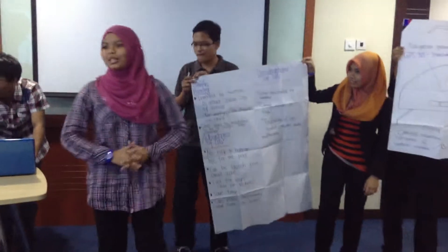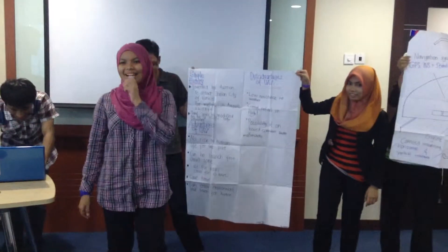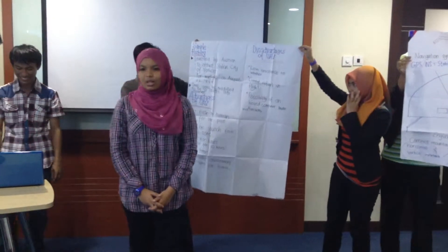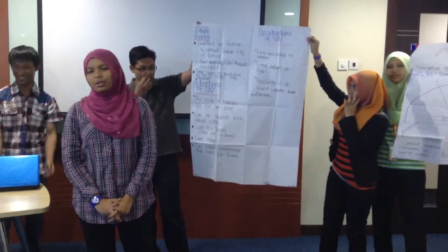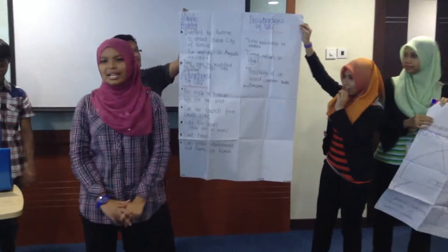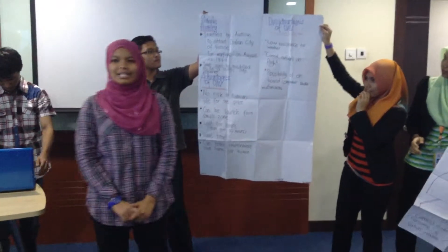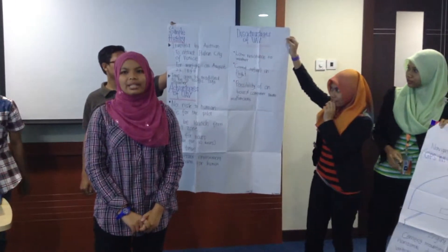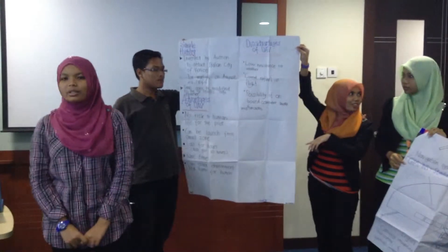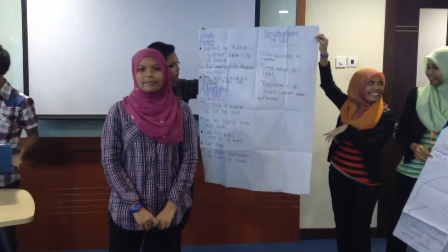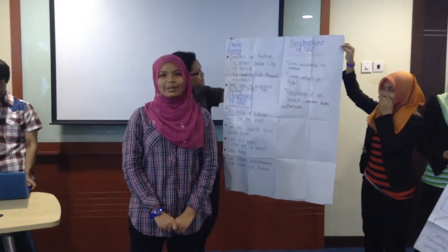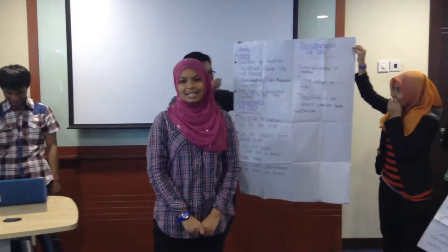Assalamualaikum warahmatullahi wabarakatuh. I'm going to tell you about the simple history of UAV. Warfighting occurred on 22 August 1849, when Austria attacked Venice, Italy, with unmanned balloons loaded with explosives. Then, modified balloons were manned with traffic information collectors.